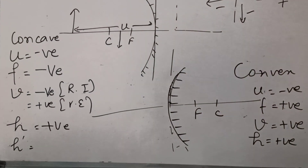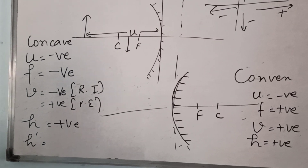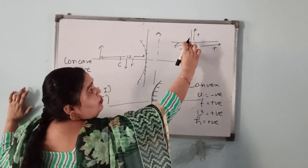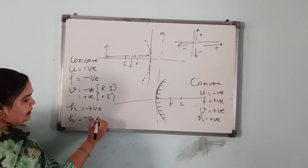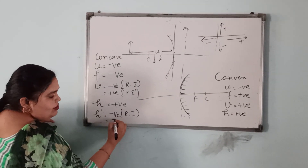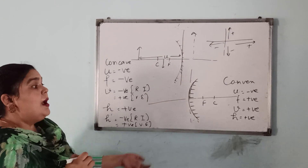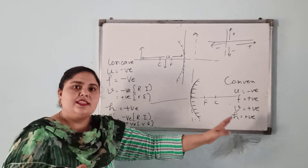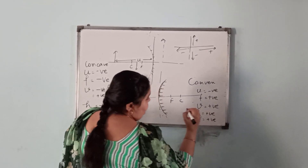The next case is h-dash. If the image is inverted, according to the rectangular coordinate system, h will be negative in the case of a real and inverted image, and h-dash will be positive in the case of a virtual and erect image. But for the convex mirror, image formed is always erect, so h-dash will always be positive.